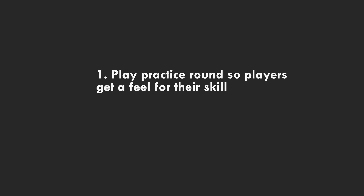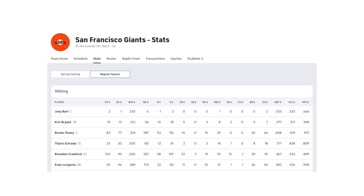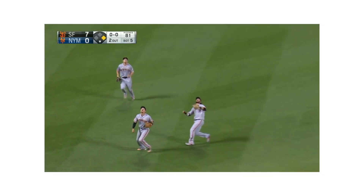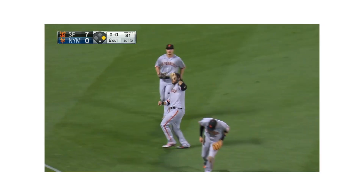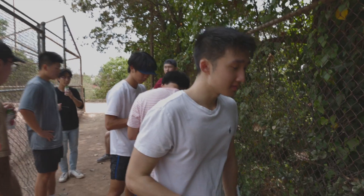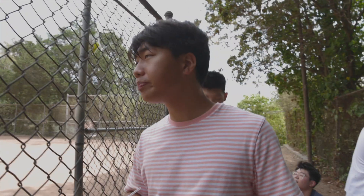In hindsight, I think we could've played a couple practice rounds first, then surveyed our players to obtain more accurate readings, since they'd already have a feel of where they stand. Of course, we could record more objective statistics, like how many runs a player made or how many times a player caught a ball, but they would be really difficult to measure since everything happened so quickly, and each player would have to play at least once, making it much more difficult to gather data for larger games.